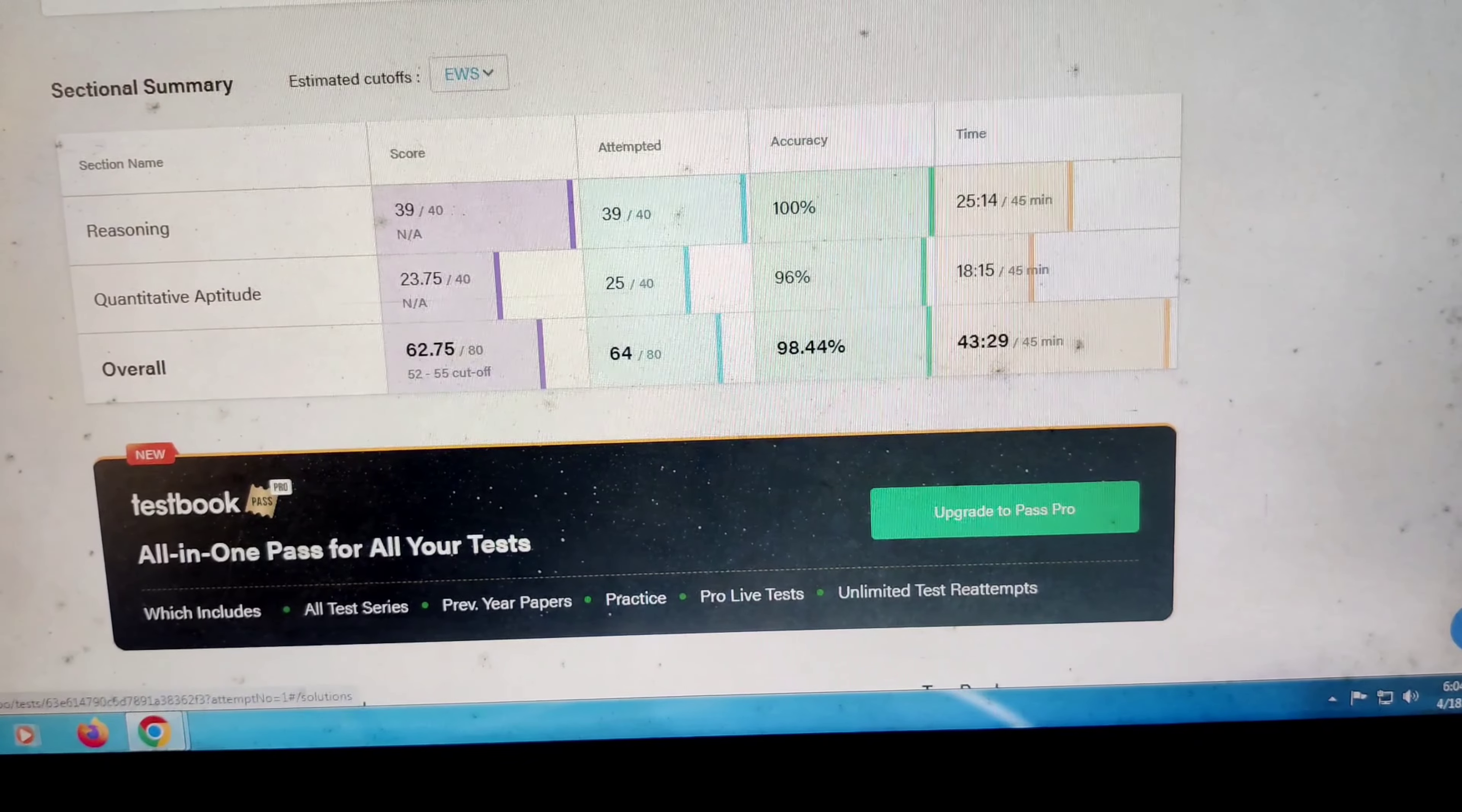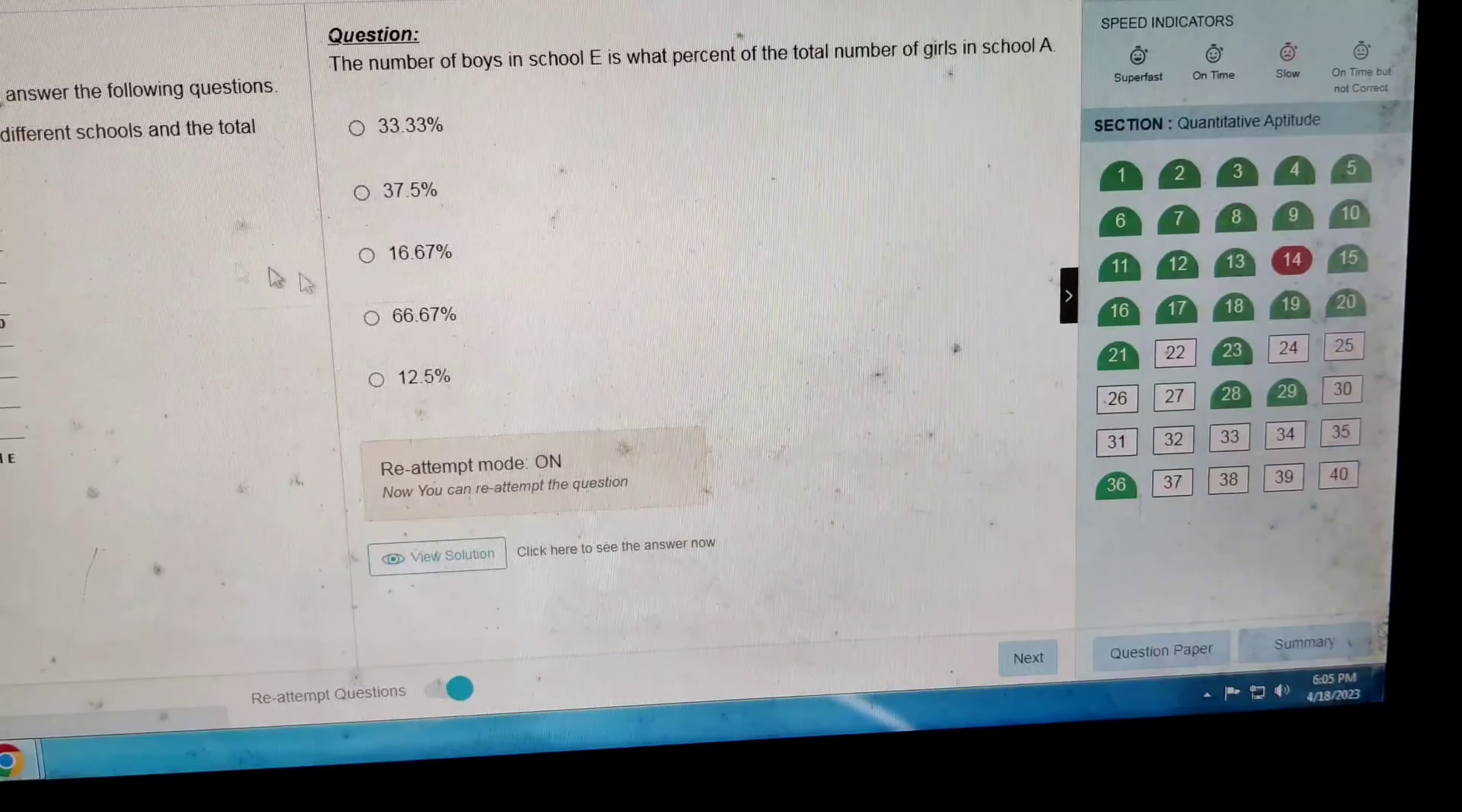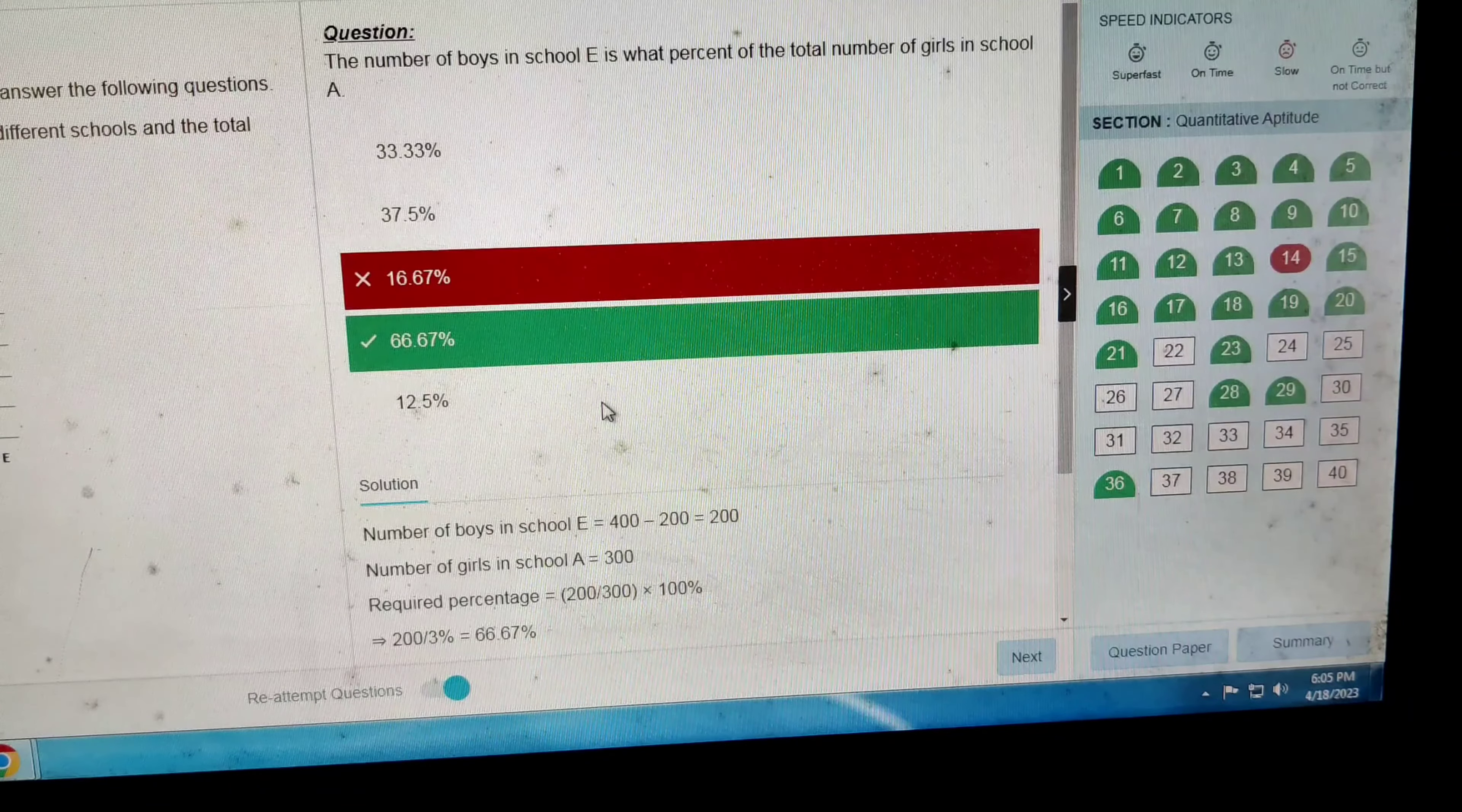Anyone who attempted this mock test, please share your score. This is the second full-length mock test in test book. So let's go to the solutions to see which questions I did mistakes in quant. This is reasoning section, all the questions are correct. Next in quant, the 14th question is incorrect. This is 2 by 3, I thought it's 16.67, so this is totally my mistake, it's 66.67. Thank you for watching this video guys, thank you.